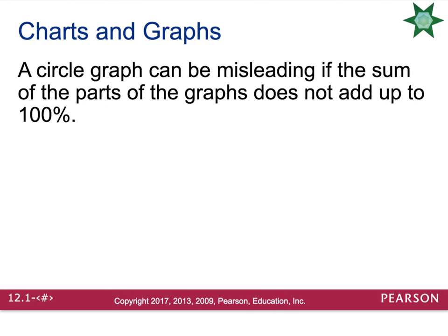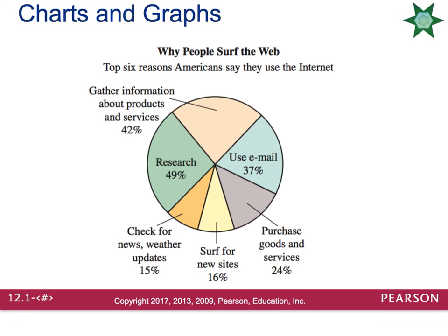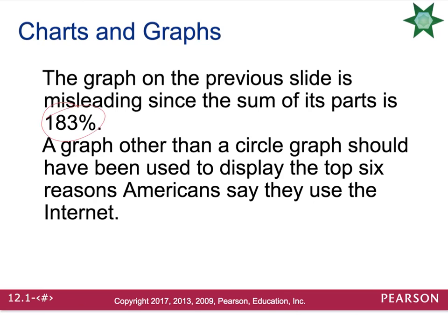A circle graph can sometimes be misleading when all the parts add up to more or less than 100%. For example, a graph showing six reasons Americans use the internet shows percentages of 42%, 49%, 15%, 16%, 24%, and 37% — totaling 183%. You can't do that with a circle graph. They should have displayed it in some other way, maybe a bar graph.